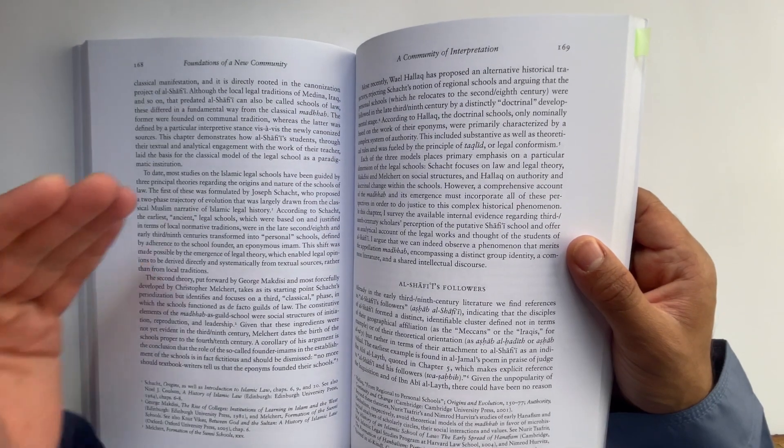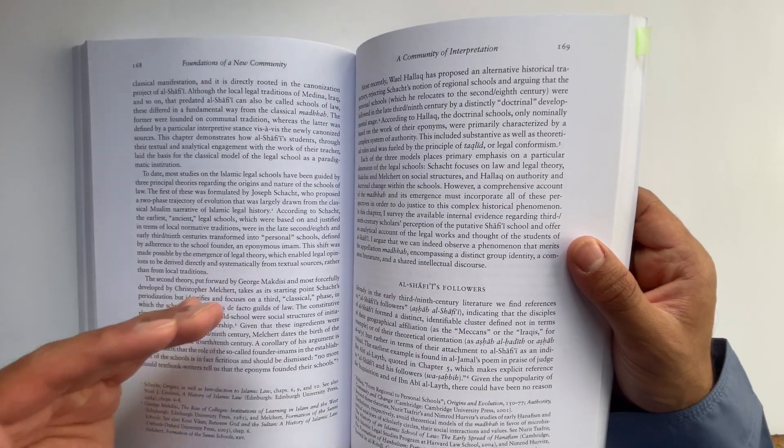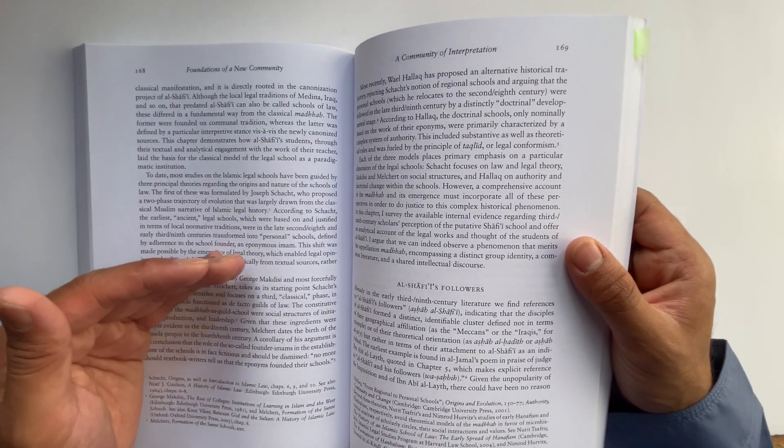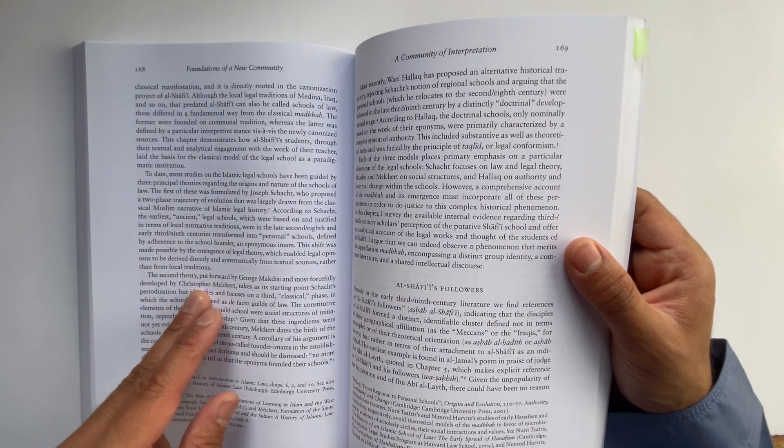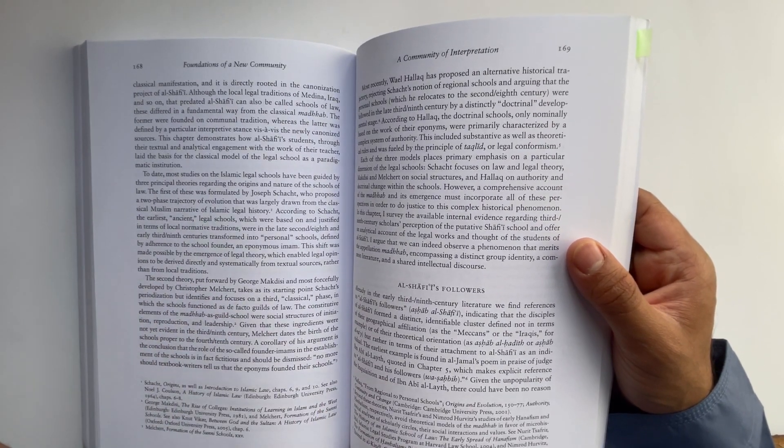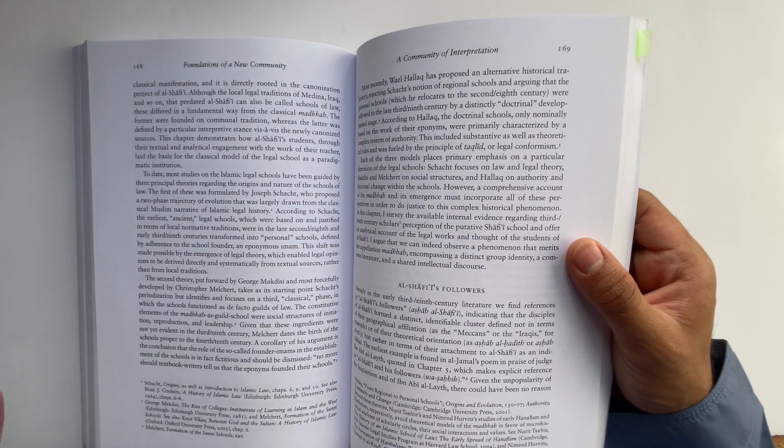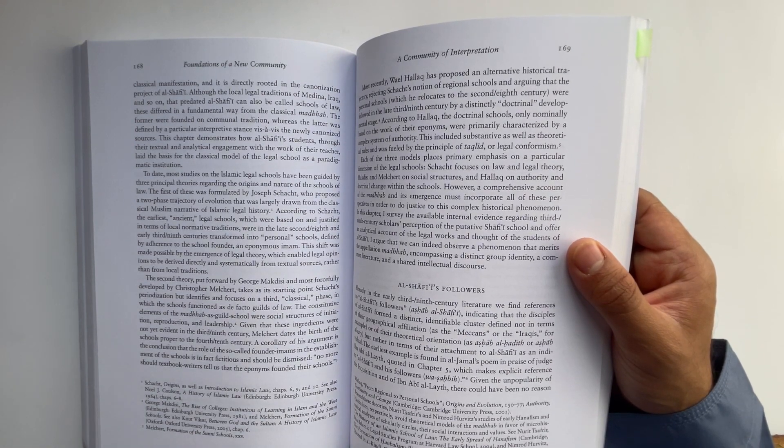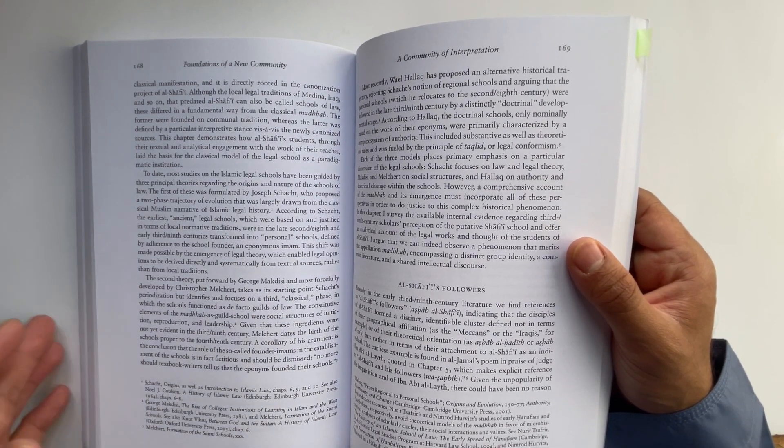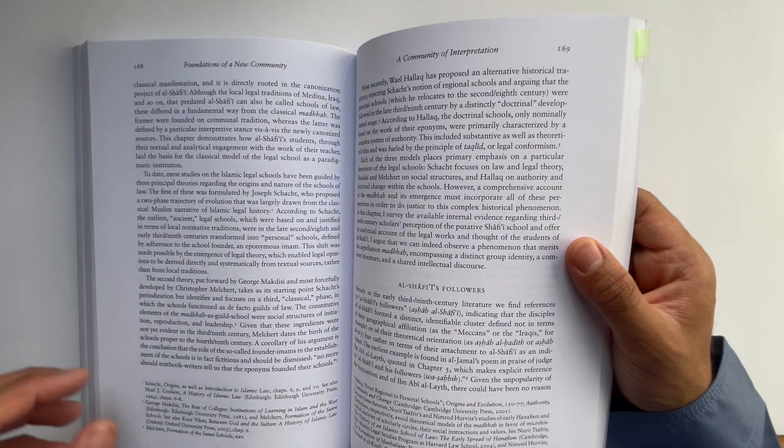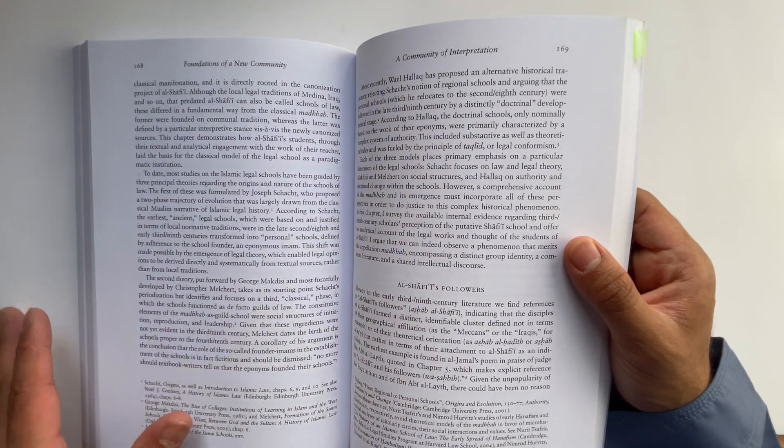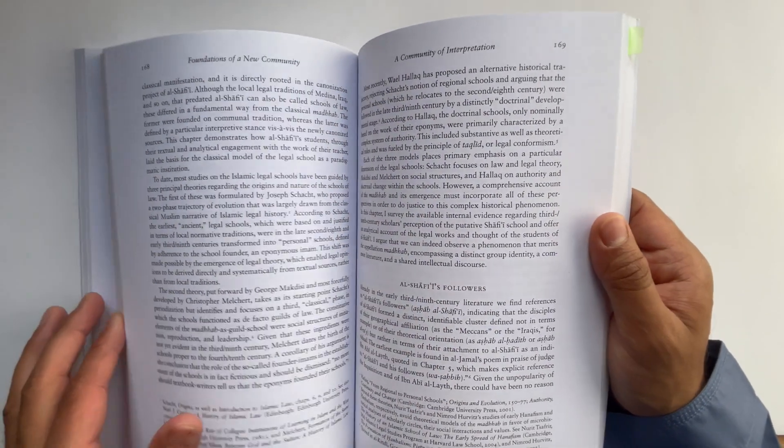which then later became personal schools. Then he speaks about the second theory, which is George Makdisi and his student, Christopher Melchut, who speak about the ancient schools, then the personal schools, and then they add one more, which is the classical or guild school. Then he speaks about Wa'il Hallaq and his theory. So he discusses all of that.